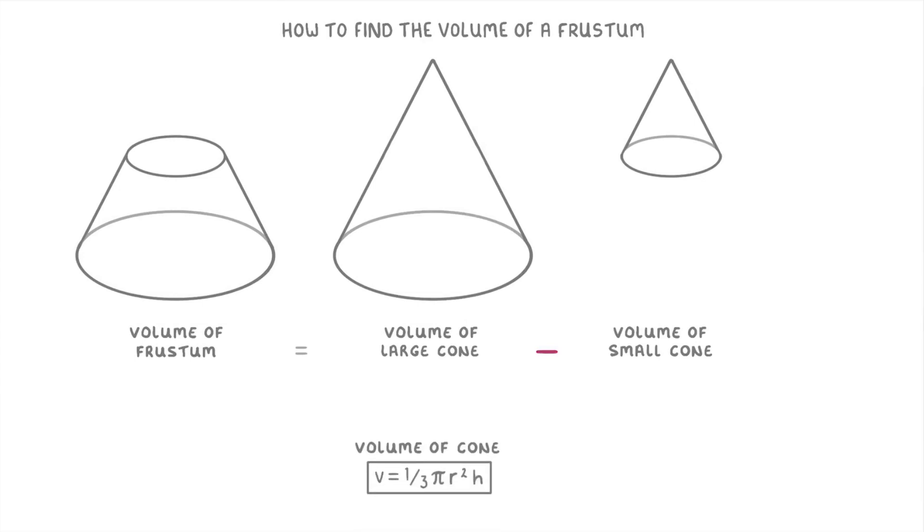The formula for the volume of a cone is one-third pi r squared h, but to distinguish between the larger and smaller cones we often use uppercase R and H in the formula for the large cone and lowercase r and h in the formula for the smaller one.